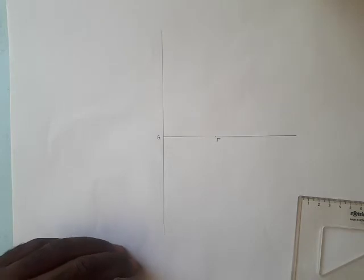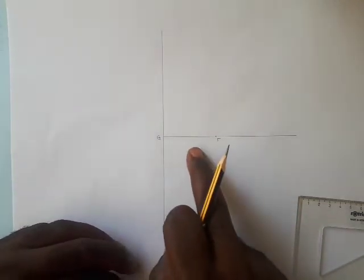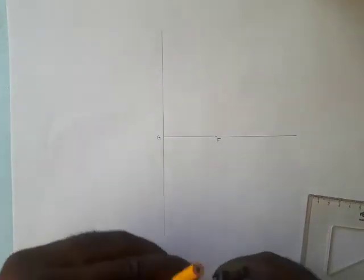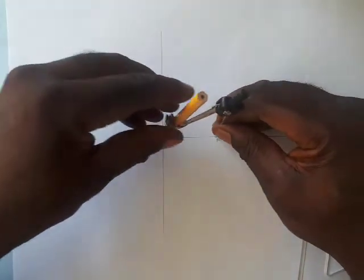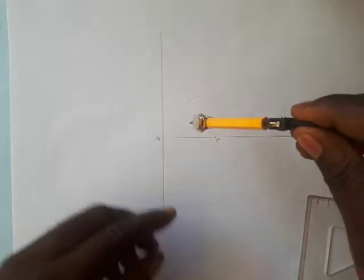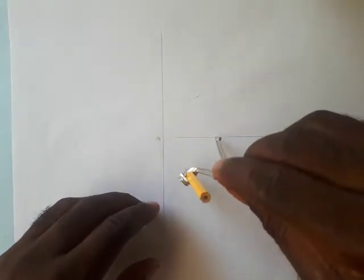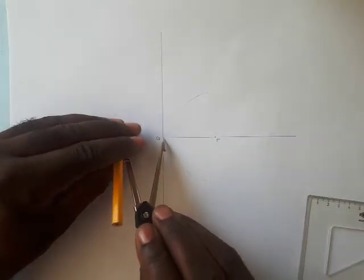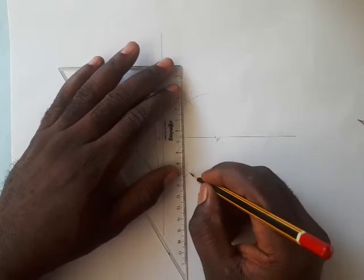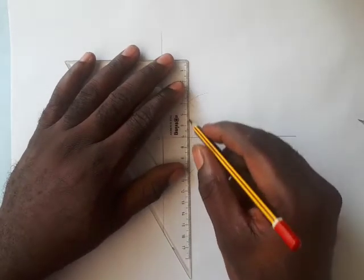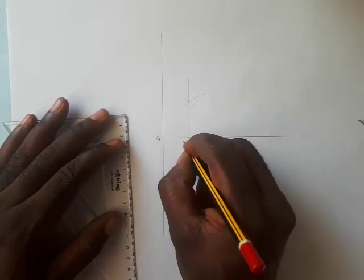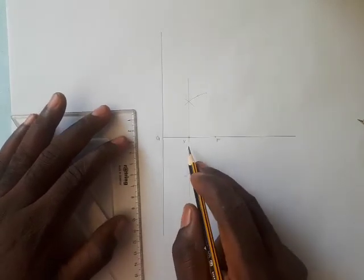Every parabola has a vertex. To locate the vertex, you bisect the line GF — the perpendicular bisector will give you the vertex. Needle on F, stretch to a convenient radius more than the line FG, and draw an arc on top and at the bottom. Then needle on G, cut the arc, connect both points, and draw a thin line through. This is the vertex of the parabola — let's call that vertex V.